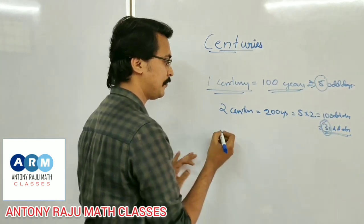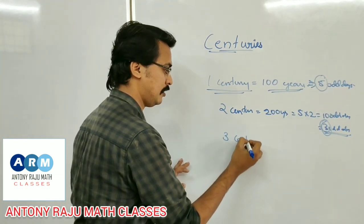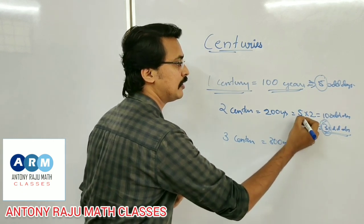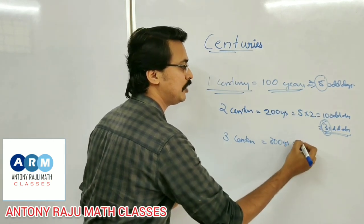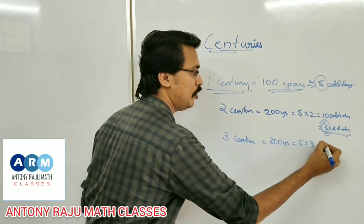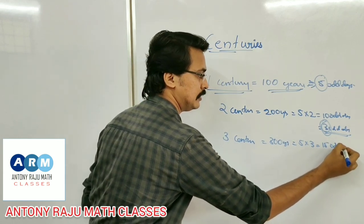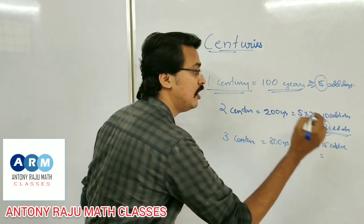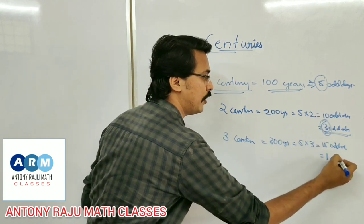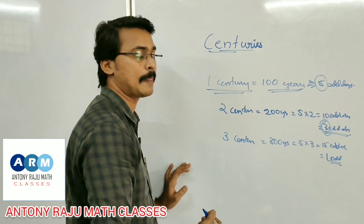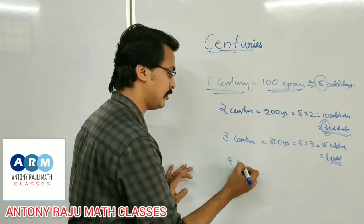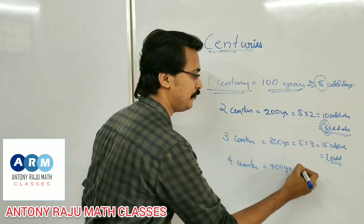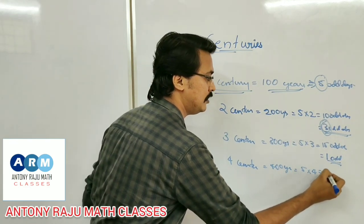For 300 years: 5 into 3 is 15 odd days. 15 divided by 7 gives a remainder of 1. So in 300 years, there is 1 odd day.